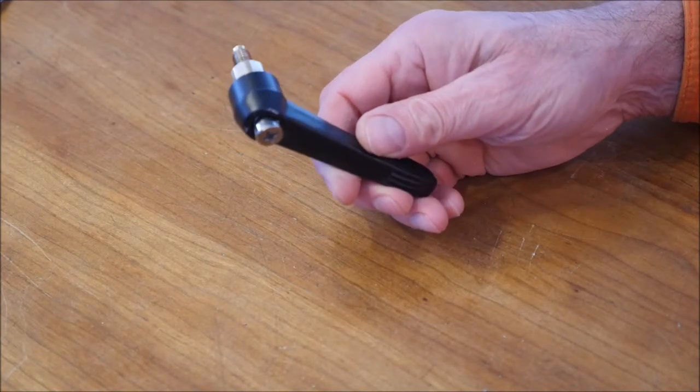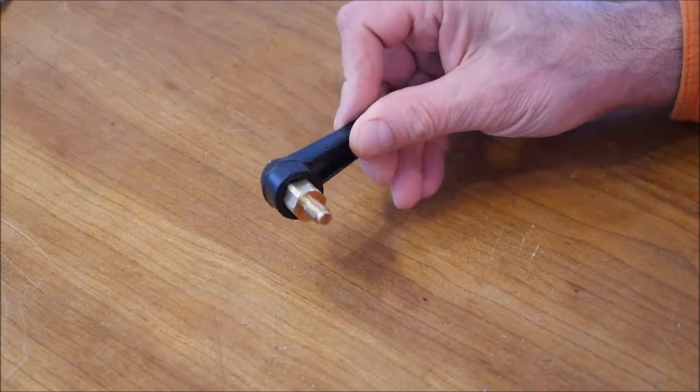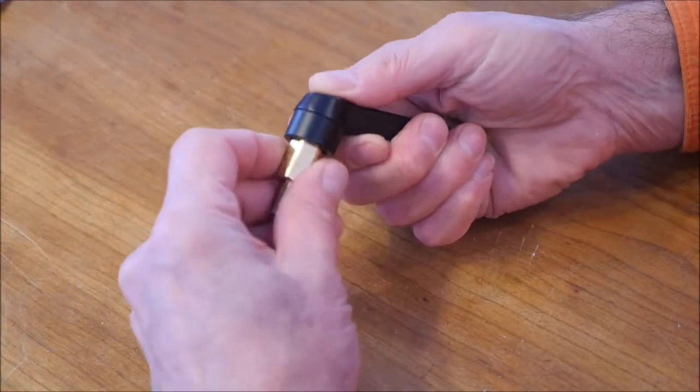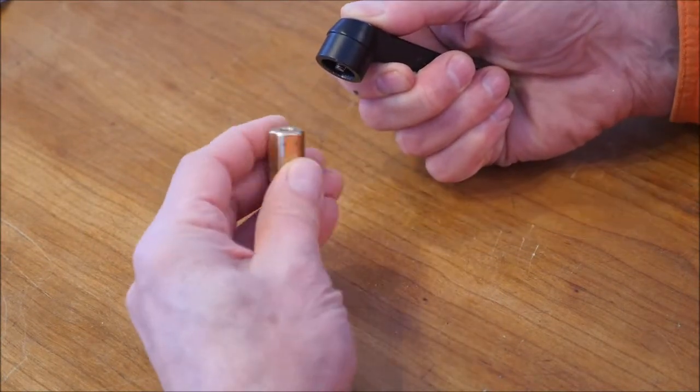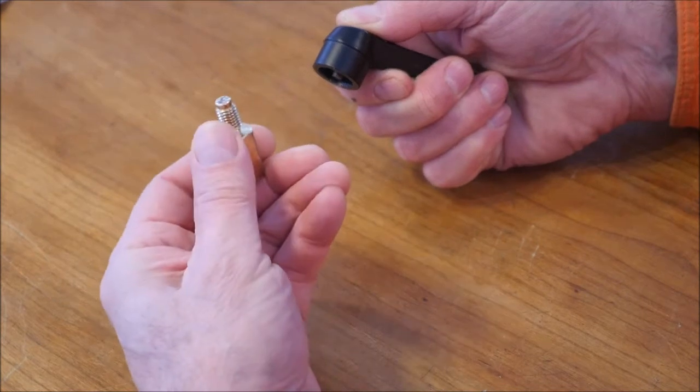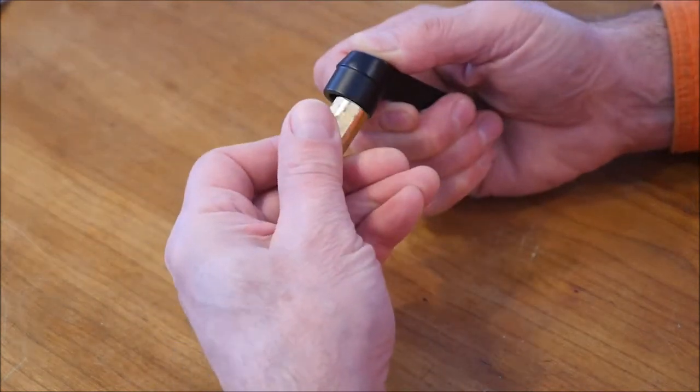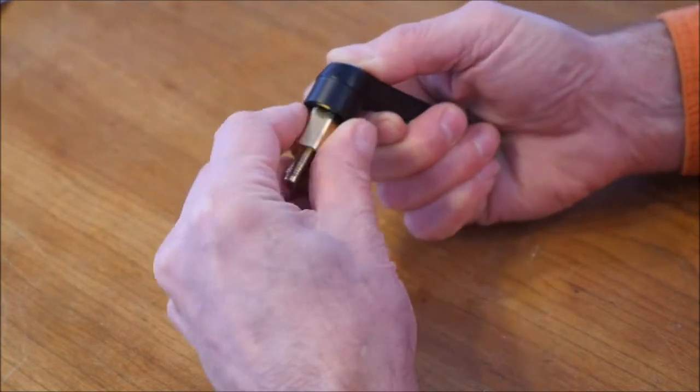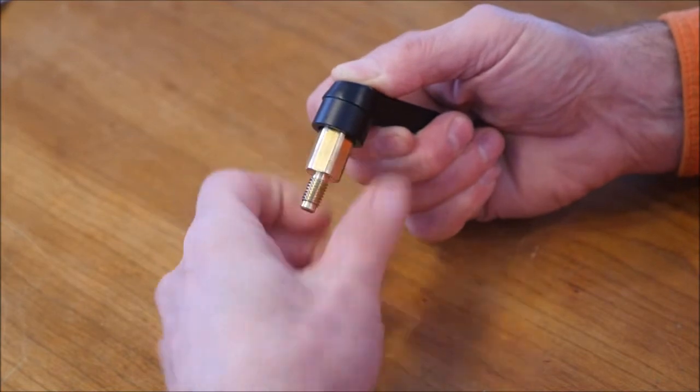This is used on Rikon bandsaws to tighten up the fence. It's made out of a brass part with a threaded hole and a threaded rod, and it threads onto the screw that's inside this fixture.